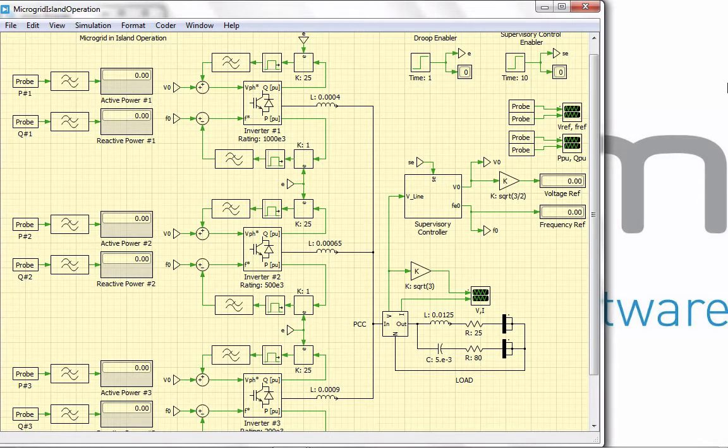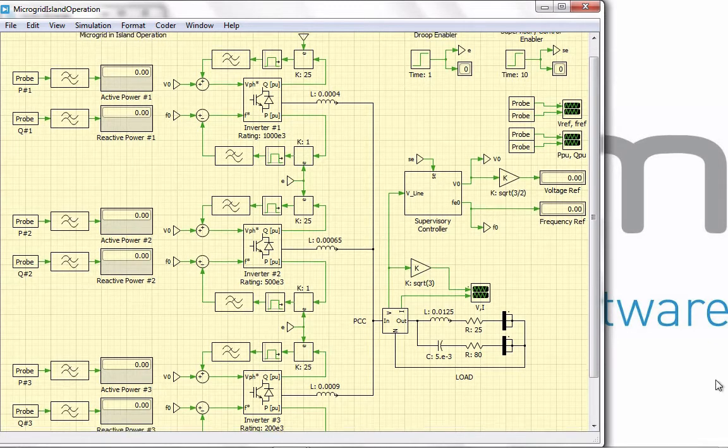The active generators here are modeled using averaged inverter blocks because inverters can provide the control and flexibility required for a microgrid operation. The three inverters have three different volt ampere ratings of 1 MVA, 500 KVA, and 200 KVA. The average configuration of the inverters is modeled using a masked subsystem.